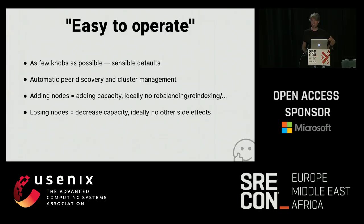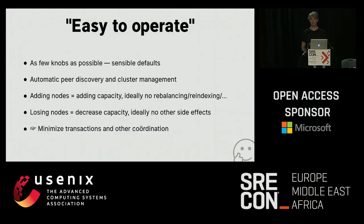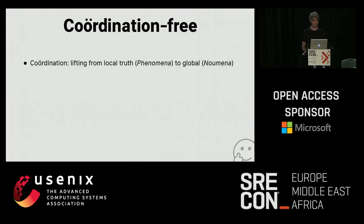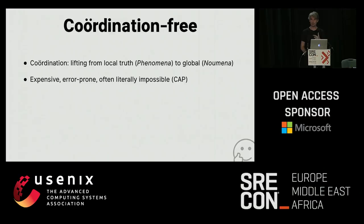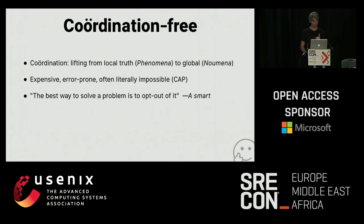Similarly, if we lose nodes we should see a decrease in capacity but otherwise no other side effects. All these things are building to this idea of a minimization of transactions and other forms of coordination. What does it mean to be coordination-free? Coordination is the act of lifting from local truth into a global nominal reality, and we know that's expensive, error-prone, and often literally impossible during partitions. So let's not do this. The best way to solve a problem is to opt out of it.